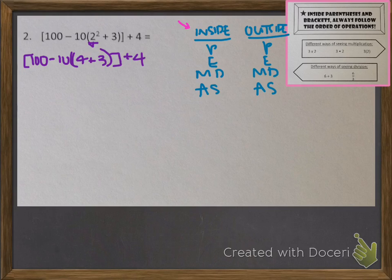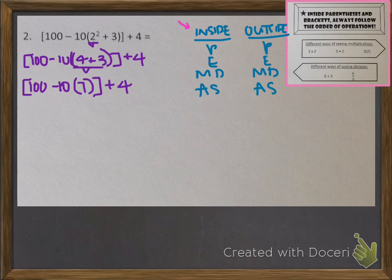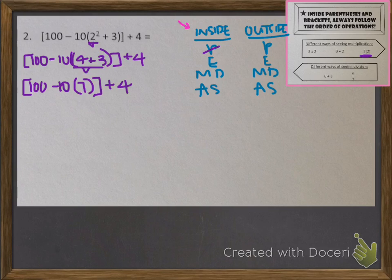I've only solved one thing so far. I'm inside the big set of brackets and have solved what's inside the inner parentheses. The only operation left inside those parentheses is to add 4 plus 3, which is 7. So now I have 100 minus 10, then 7 in parentheses, closed bracket, plus 4. On this line, there's no longer any operation inside the parentheses, but 10 right next to 7 in parentheses with nothing in between means multiplication — so that means 10 times 7. I've solved everything inside the parentheses.